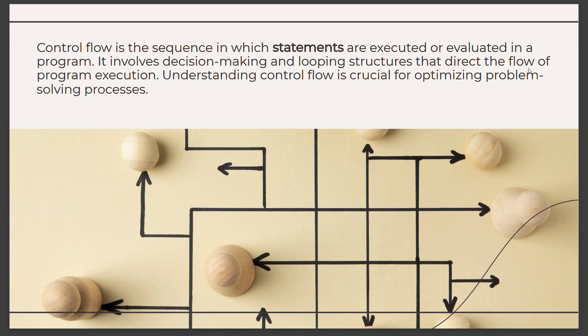Control flow is the sequence in which statements are executed or evaluated in a program. It involves decision making and looping structures that direct the flow of program execution. Understanding control flow is crucial for optimizing problem solving processes.